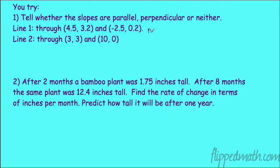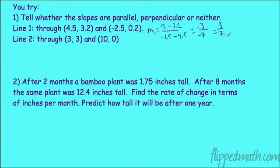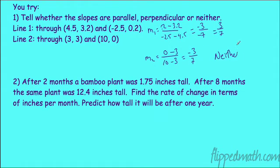Find the slope of the first line: 0.2 minus 3.2 over negative 2.5 minus 4.5 equals negative 3 over negative 7, which is positive 3/7. Slope of the second line: 0 minus 3 over 10 minus 3 equals negative 3 over 7. Positive 3/7 and negative 3/7 are not equal and not negative reciprocals, so these lines are neither parallel nor perpendicular.